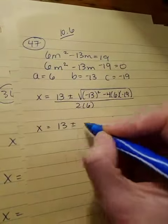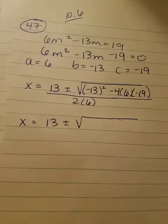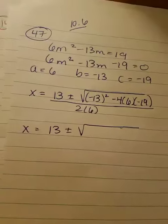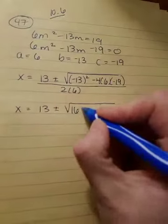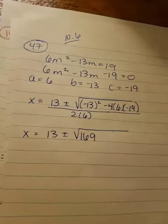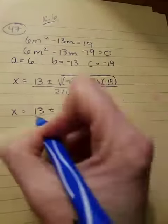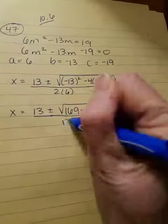So negative 13 squared, you're going to tell me is 169, positive remember. And then negative 4 times 6 times negative 19 gives you positive 456, divided by 12.